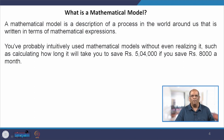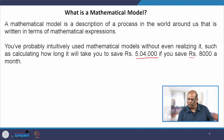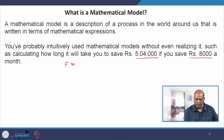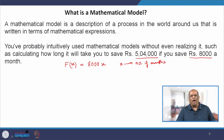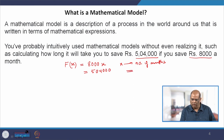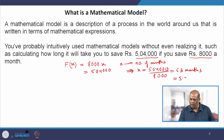Suppose you have a job and you plan to buy a car. You estimate that you need 5,04,000 rupees to buy the car, and you can afford to save 8,000 rupees a month — so how many months will it take? You write a function f(x), where x is the number of months: 8,000 multiplied by x equals 5,04,000. Solving this gives x equal to 5,04,000 divided by 8,000, which is 63 months, approximately 5.25 years.